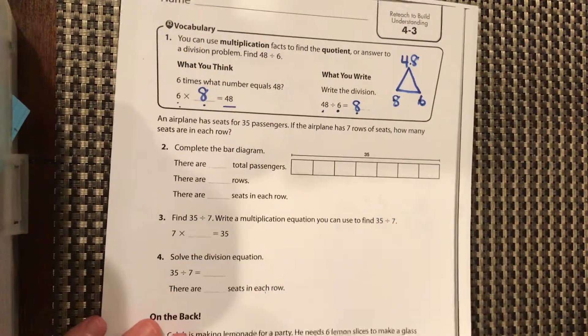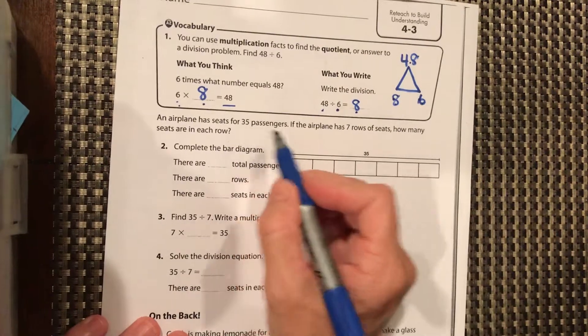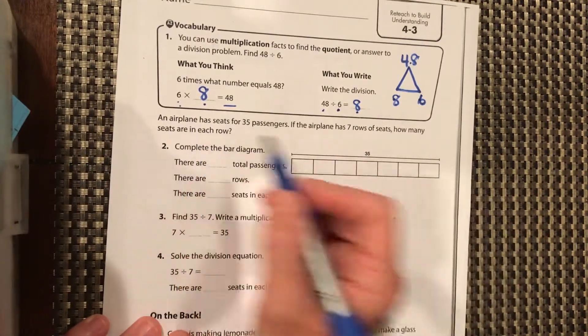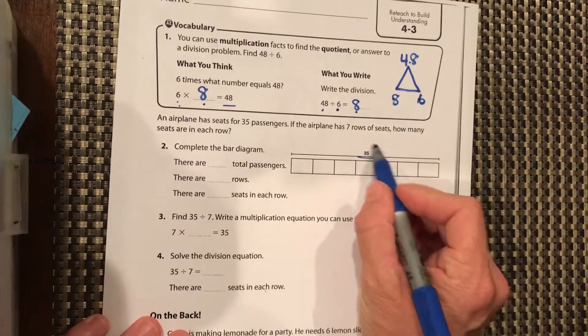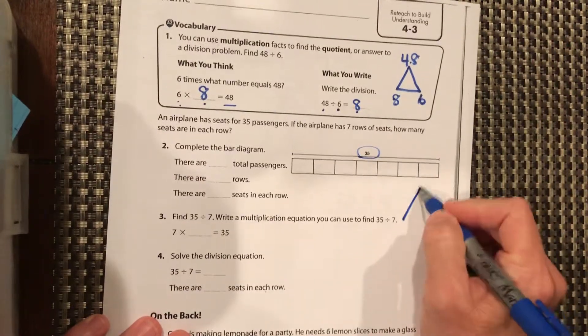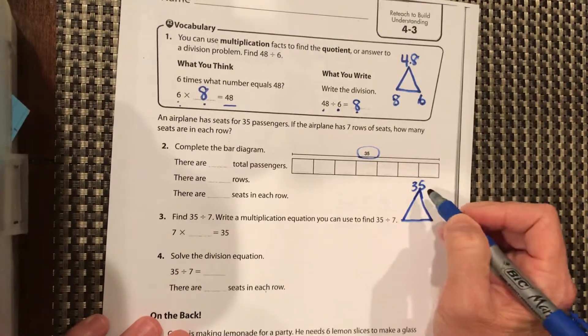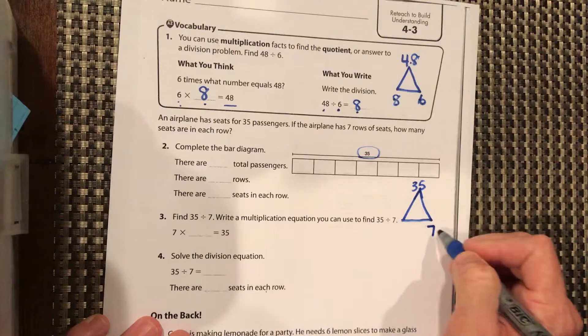Okay, an airplane has 35 passengers. If the airplane has 7 rows of seats, how many seats are in each row? Okay, we know our bar diagram, our largest number is on top. So we can draw our little mountain here, 35. Largest number goes on the top. 7 is over here.